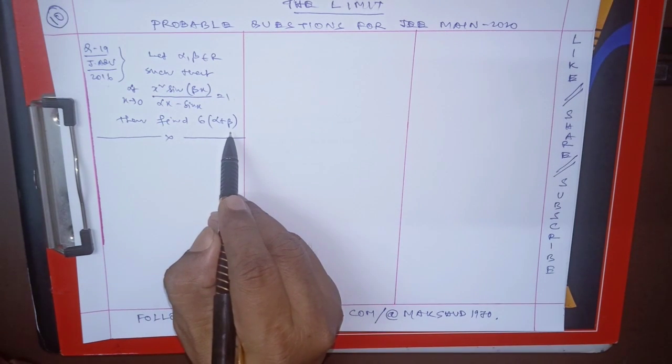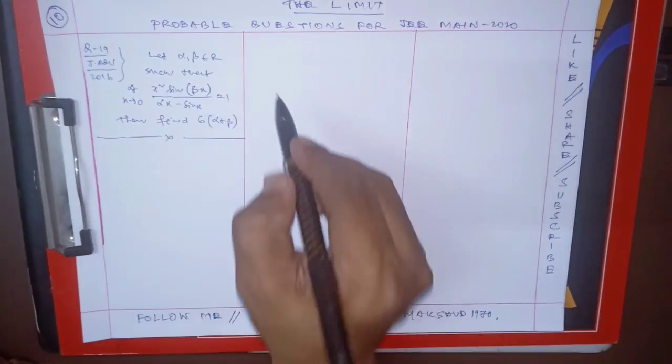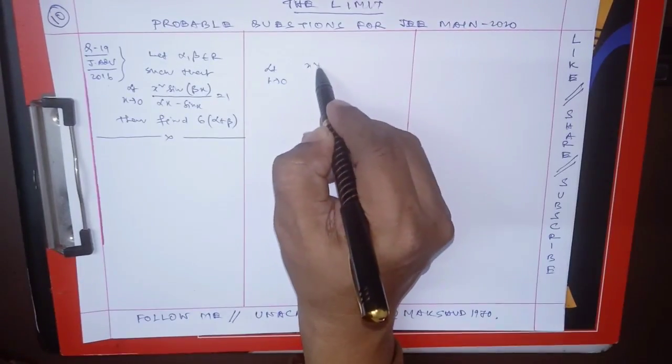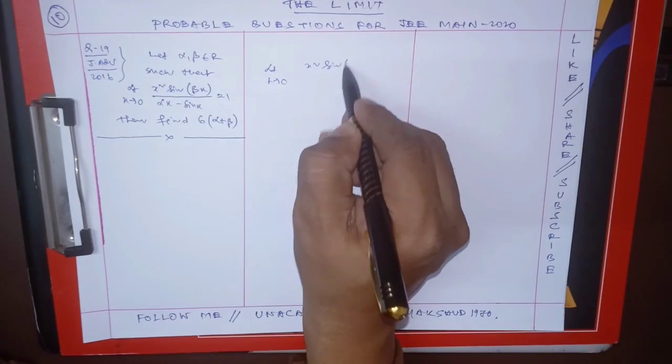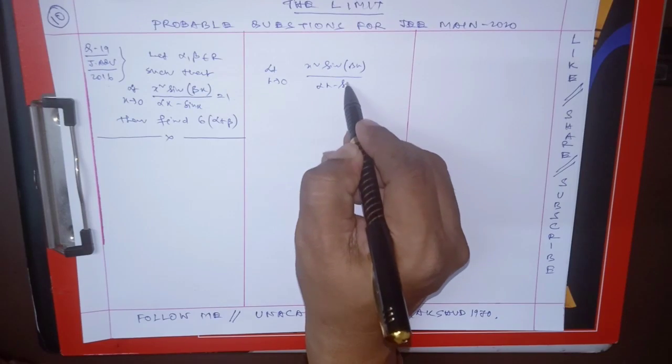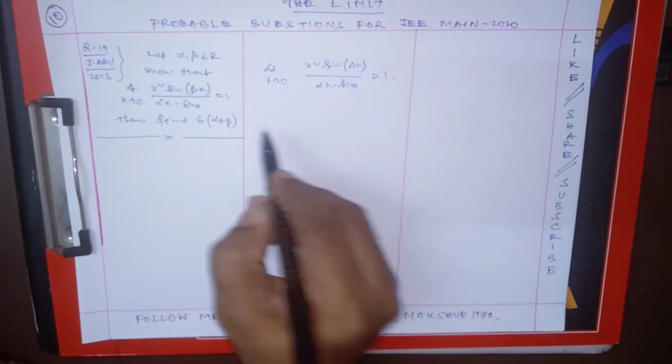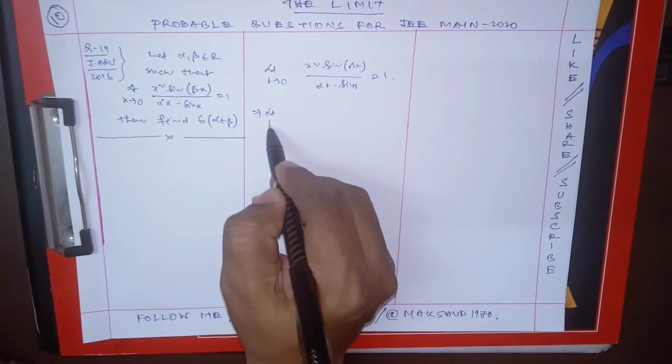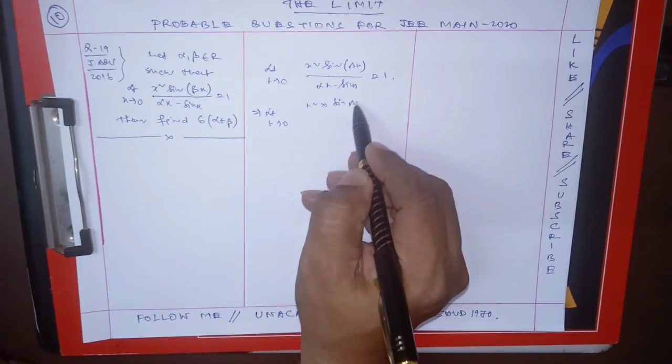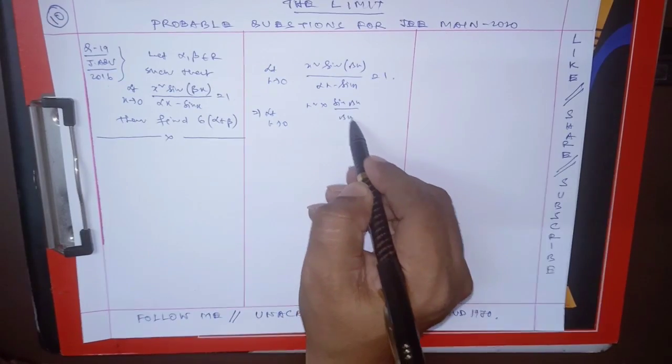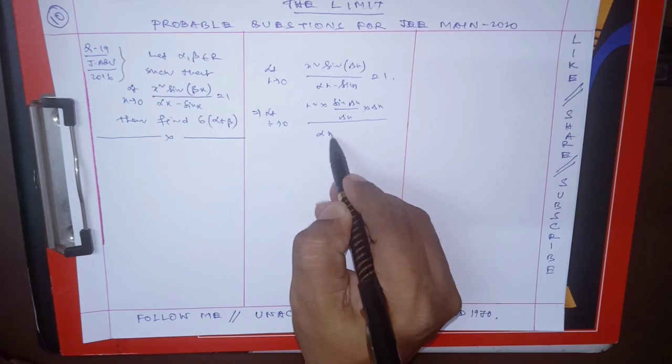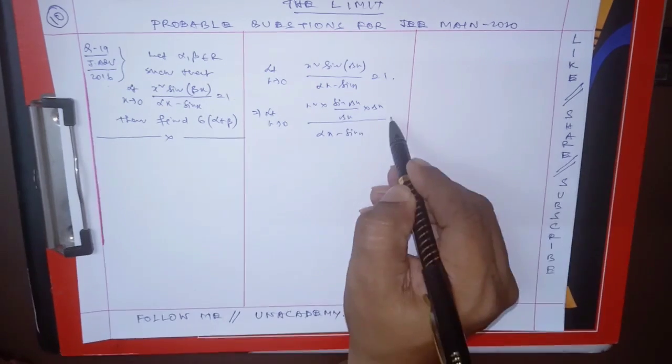So dear friends, this question, limit x tends to 0, this is x squared sine of beta x, and this is by alpha x minus sine x, that is equal to 1. So you can write this as x squared into sine beta x by beta x into beta x, and this is by alpha x minus sine x, that is equal to 1.